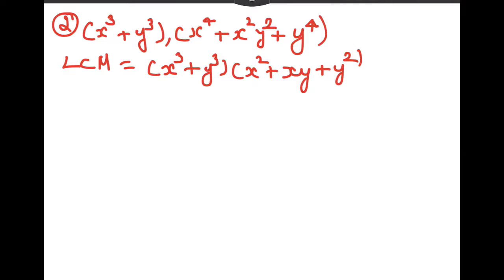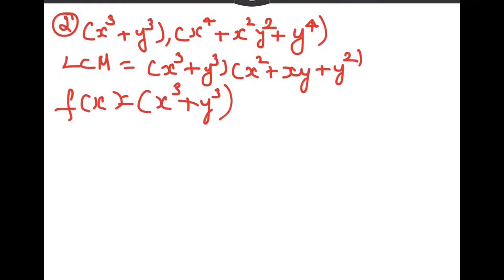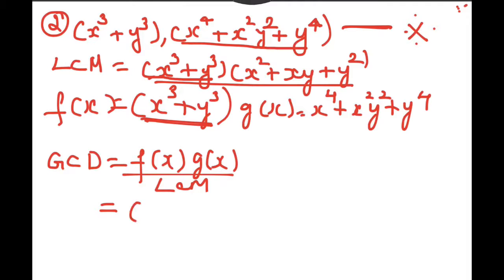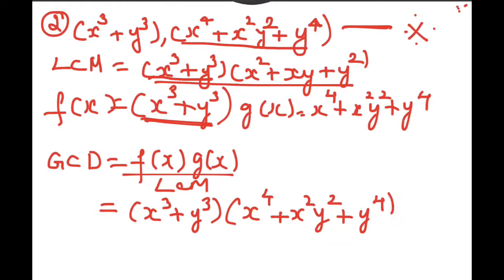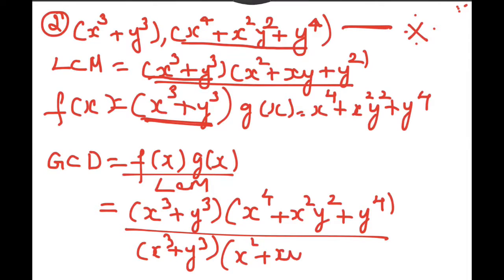Second sum: F of x is equal to x cube plus y cube, and G of x is equal to x to the power of 4 plus x squared y squared plus y to the power of 4. LCM is equal to x cube plus y cube into x squared plus xy plus y squared. We cancel common factors.